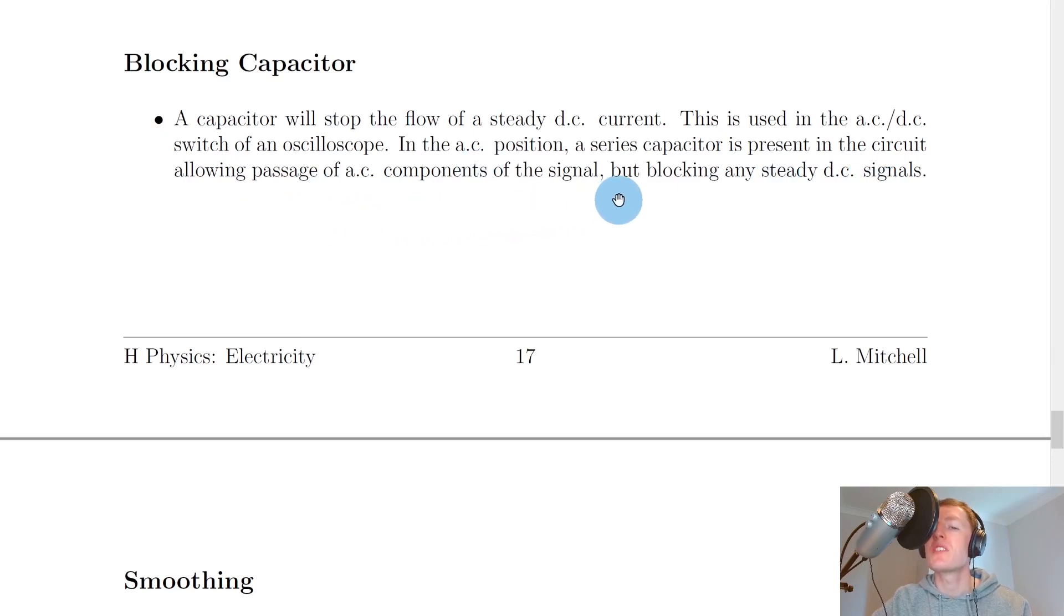To summarize, a capacitor can be used to block DC signals and let AC signals pass through. So not only is this useful in things like oscilloscopes, but it could also be useful for any device that requires the filtering of signals such as speakers and subwoofers.